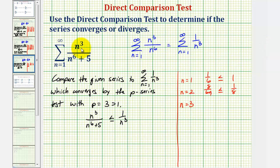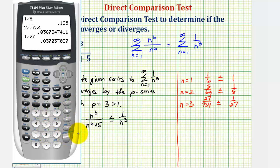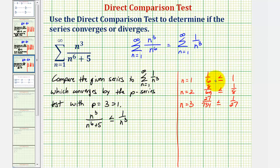For n equals three, we'd have three cubed, that's twenty-seven, divided by three to the sixth plus five, which should be seven hundred thirty-four. And for one divided by n cubed, we'd have one twenty-seventh. Converting to decimals: twenty-seven divided by seven thirty-four and one divided by twenty-seven. Notice how twenty-seven divided by seven thirty-four is less than or equal to one twenty-seventh. So we've shown enough, and we can conclude that this is true.